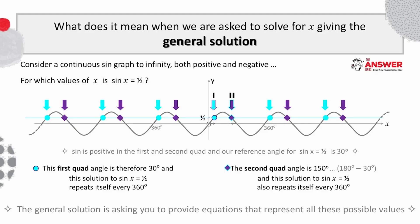We'll refer to the sine graph to illustrate the concept of general solution. As you can see, the graph has been drawn extending to infinity in both directions. Let's consider all the possible values of x for which sine of x equals a half. So all the places where this line cuts the graph.